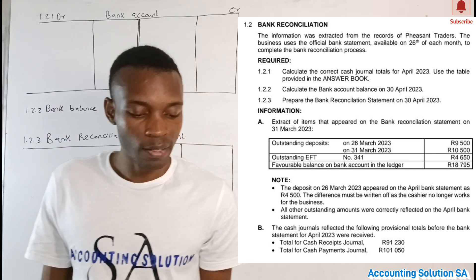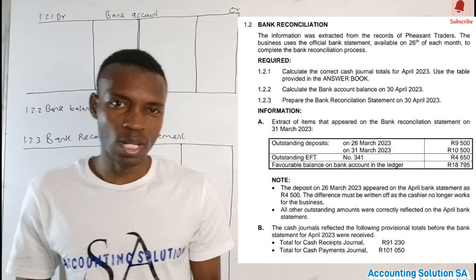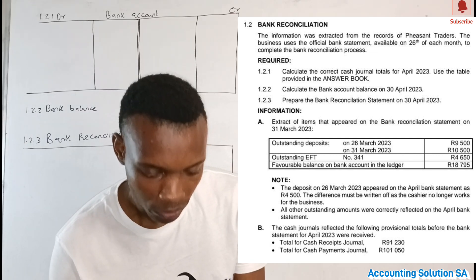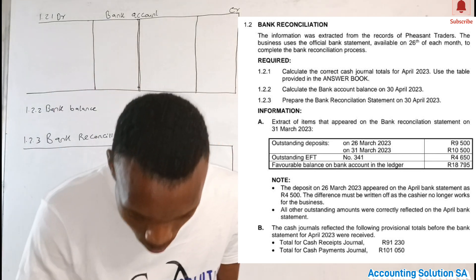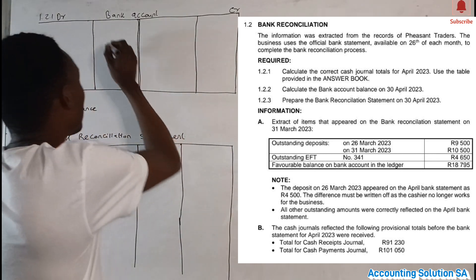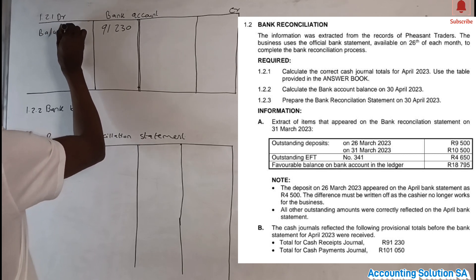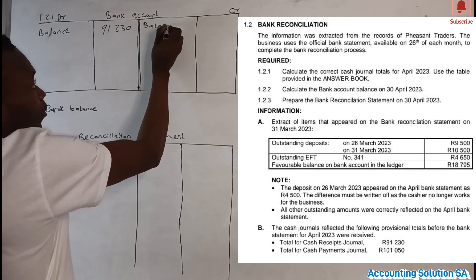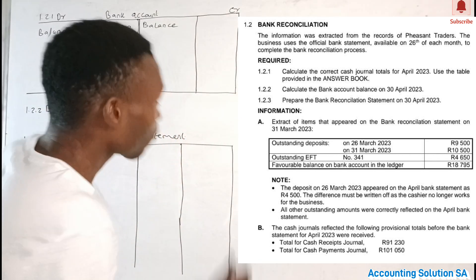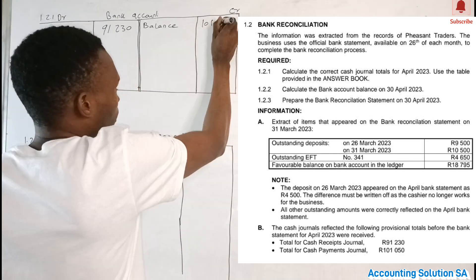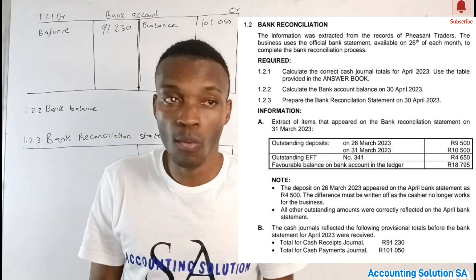The cash journals reflect the following provisional totals before the bank statement for April 2023 was received. These are totals we have to post before we adjust all those transactions. Under the cash receipts journal, which we record on the debit side, we have 91,280. We also have a cash payment balance — cash payments come to the credit side, cash receipts on the debit side — and we have 101,050.